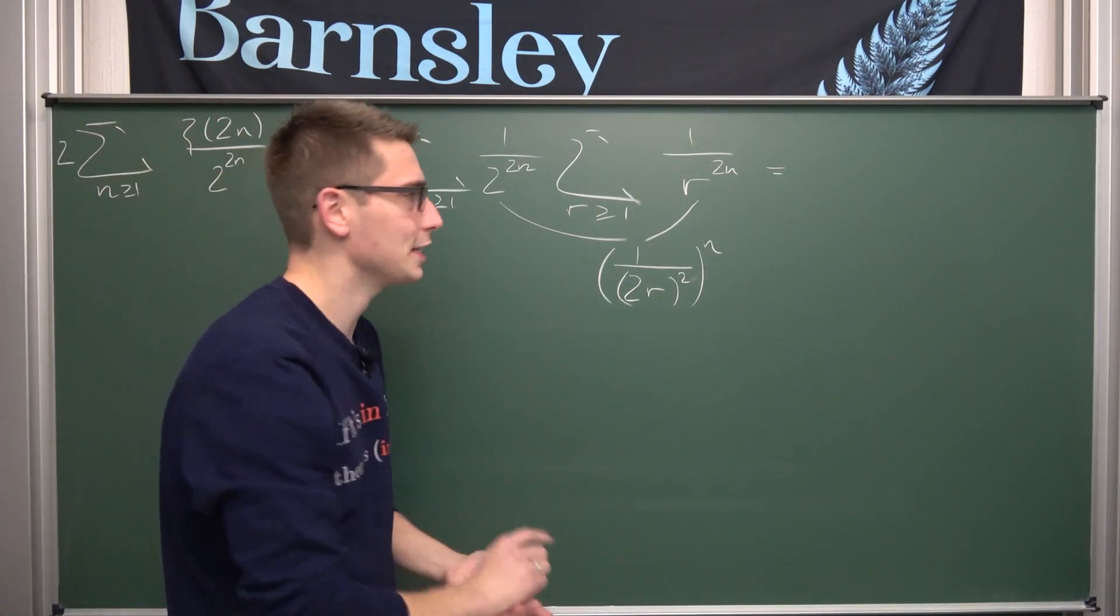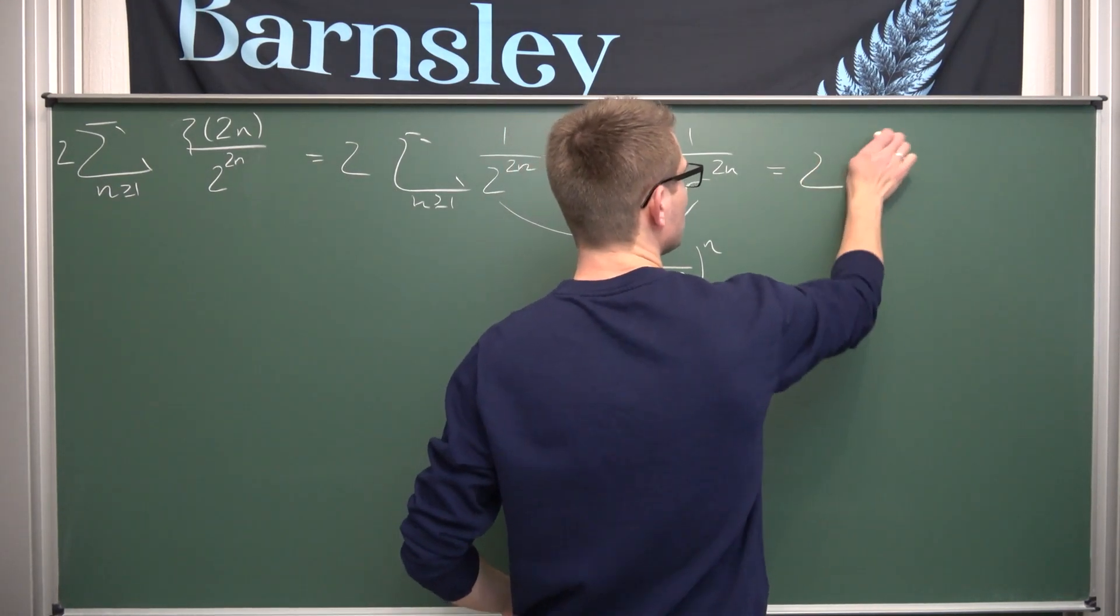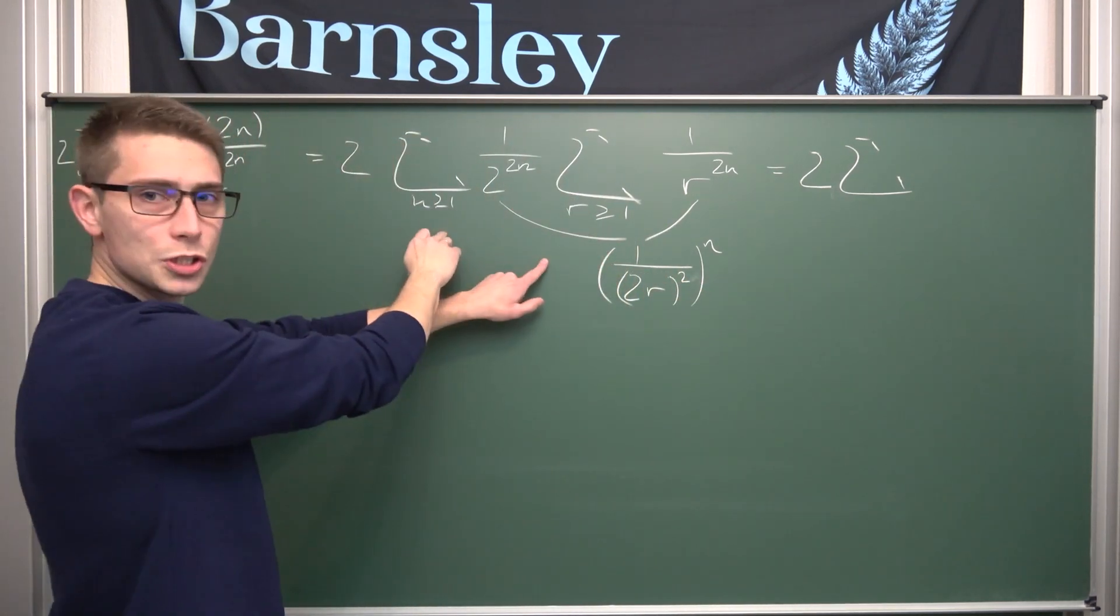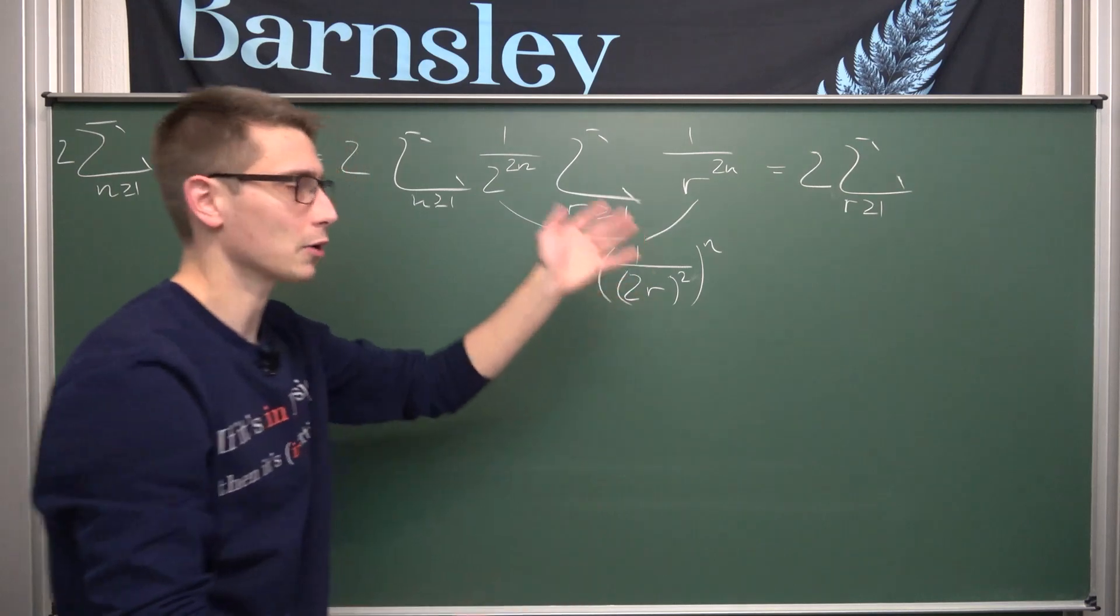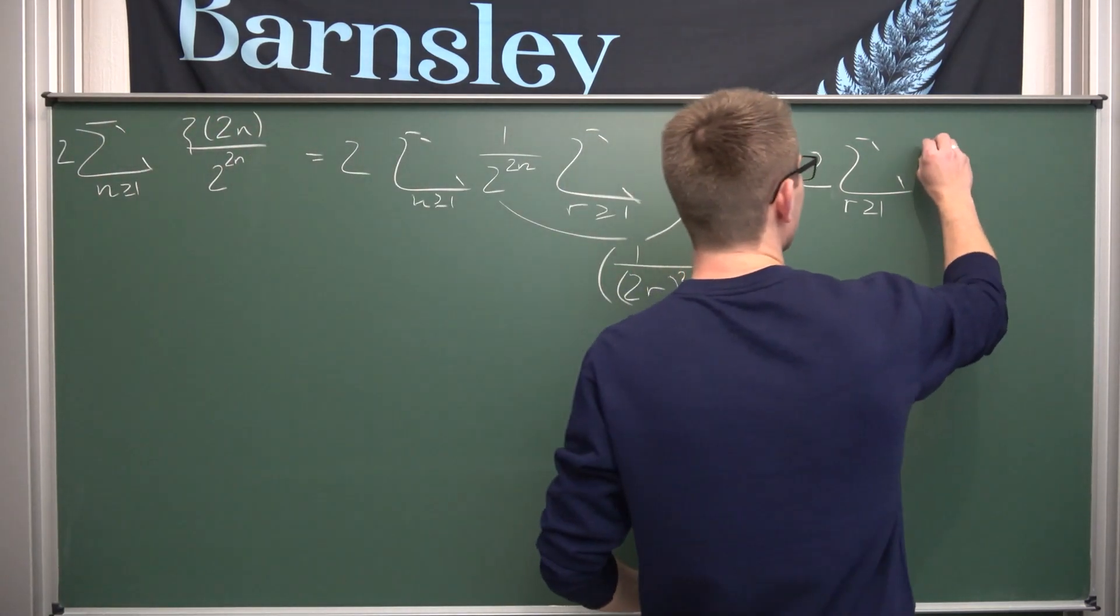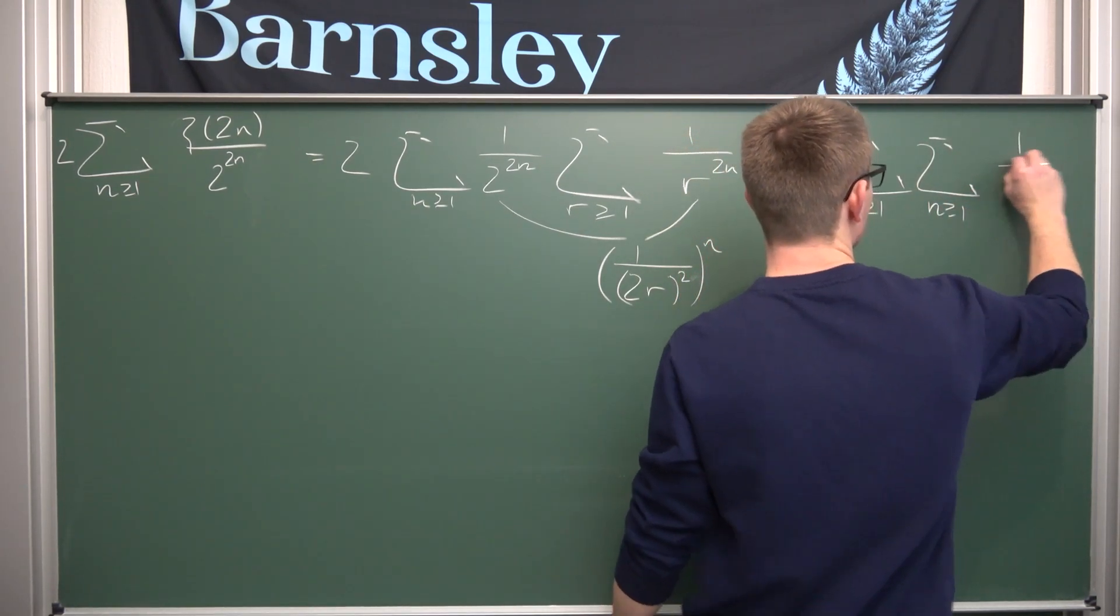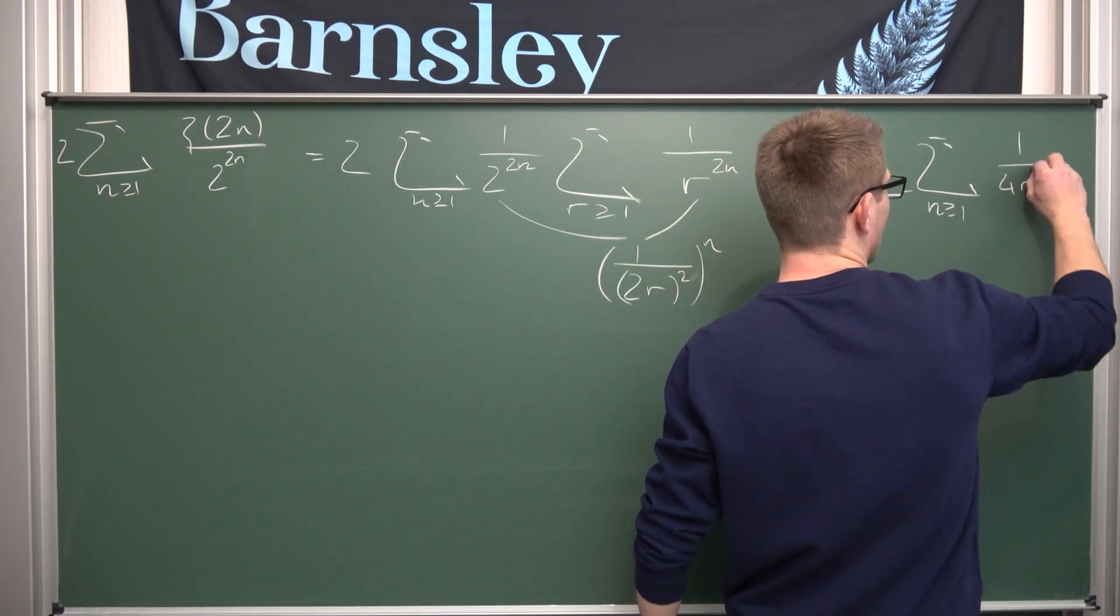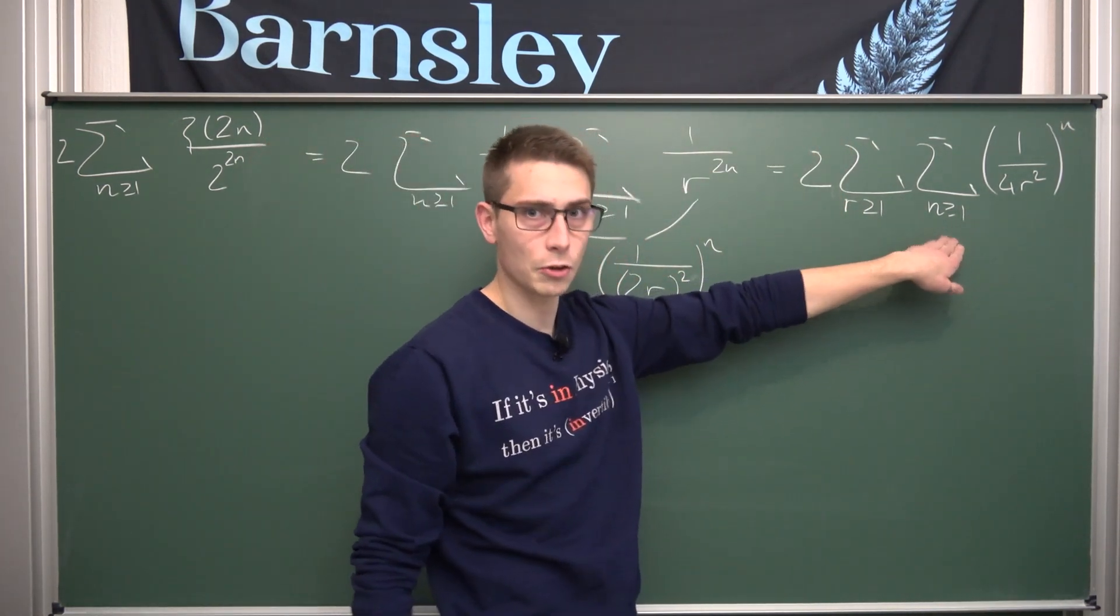It's just a matter of rewriting things. Leaving us with two times, this is two times, and then we have the first series. I'm going to interchange those two right here because I can. Let's say we are going to Fubini the shit out of those two integrals. And then we are going to have this infinity sum where n is greater or equal to 1 of 1 over, and 2r squared is going to give us 4r squared, and this whole thing to the nth power.